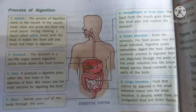The first organ is the mouth. The process of digestion starts in the mouth. In the mouth, teeth chew and grind the food into small pieces. During chewing, a liquid called saliva mixes with the food. It makes the food soft and moist and helps in digestion.